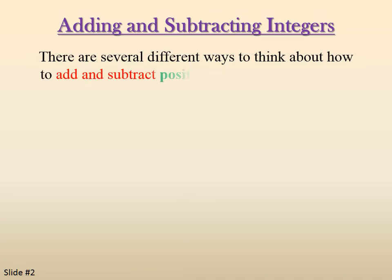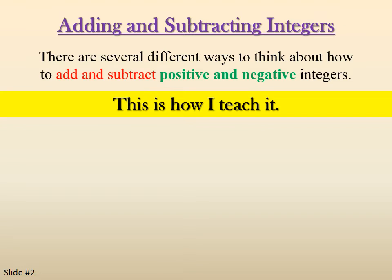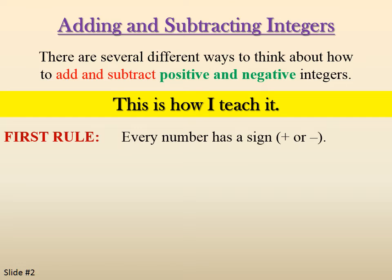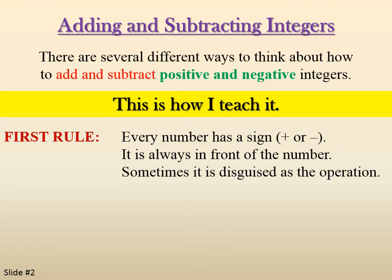There are several different ways to think about how to add and subtract positive and negative integers. This is how I teach it. First rule: every number has a sign, so every number is either a positive number or a negative number. The sign is always in front of the number. Sometimes it is disguised as the operation. Example: